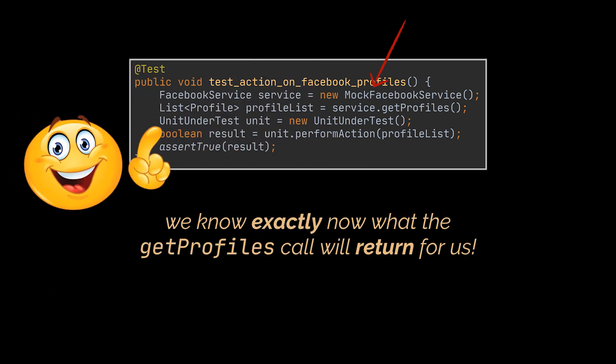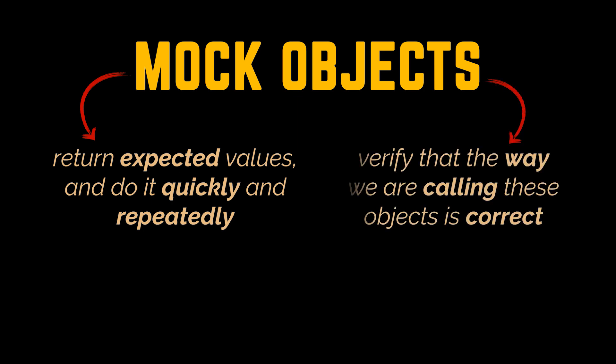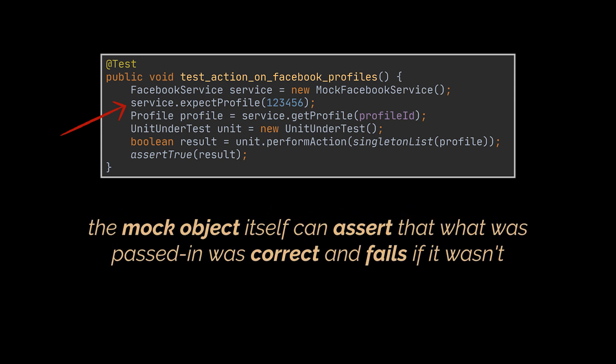An important but subtle distinction: in this test you are not interested in testing the actual Facebook service — it is a given. Now there are two things we often do with mock objects. We want them to return expected values quickly and repeatedly, but we also want to use them to verify that the way we are calling these objects is correct. For example, we could tell the mock to expect a certain profile ID, and later when we call the getProfile method, the mock itself can assert that what was passed in was correct, failing if it wasn't.